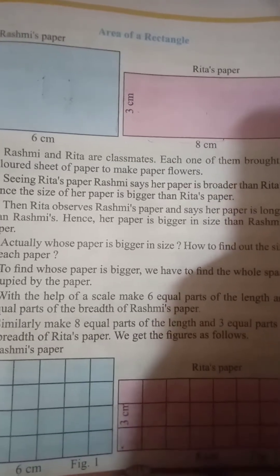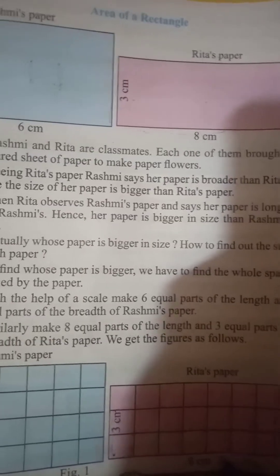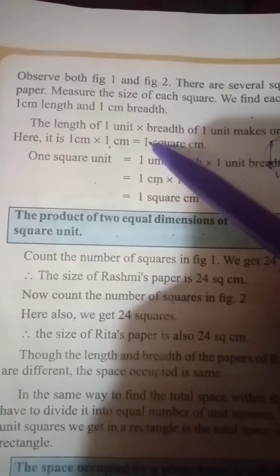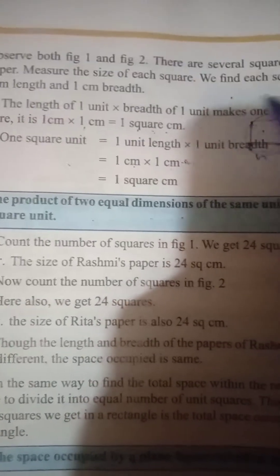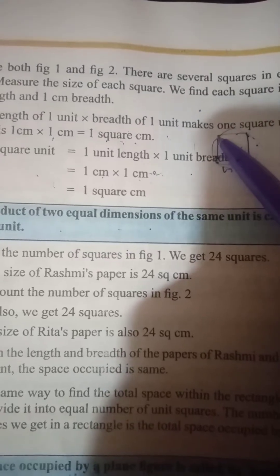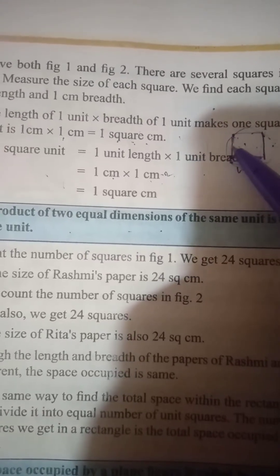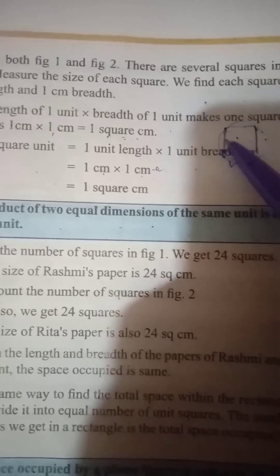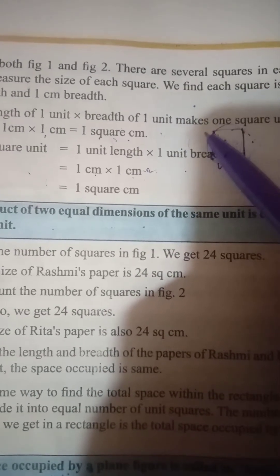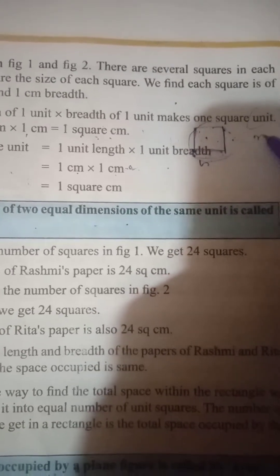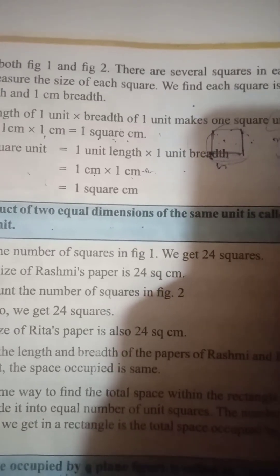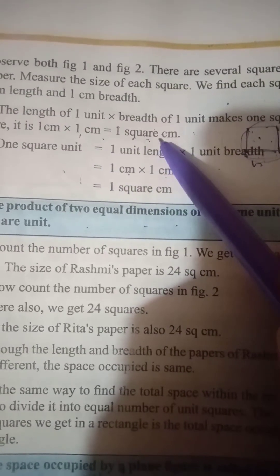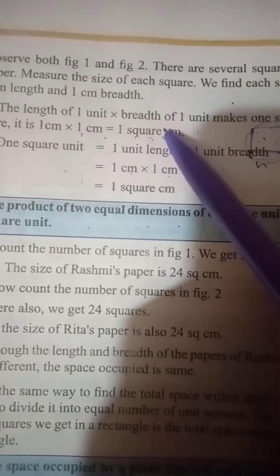The length is 3 centimeters and 8 centimeters. The length of one unit into breadth of one unit — one centimeter into one centimeter — makes one square unit. Units can be meters or centimeters. One centimeter into one centimeter is one square centimeter.